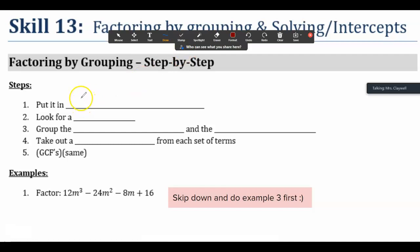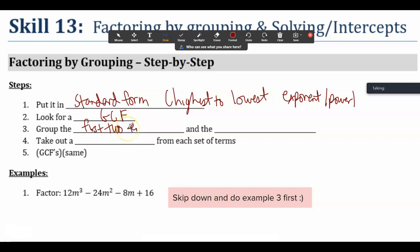So first thing we want to do is put it in standard form, highest to lowest exponent. Look for greatest common factor, group the first two terms and the second two terms. Then we want to take out a greatest common factor from each set of those terms. Then we should have the greatest common factor the same. This will make a lot more sense if we actually do one.